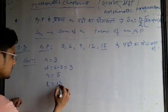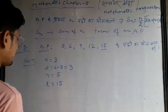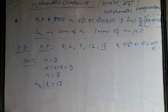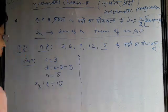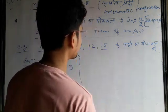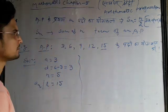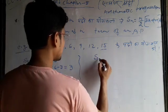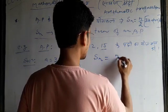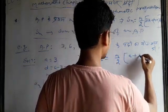We will use L equals 15. If we know L, to find the sum we use the short formula: Sn is equal to n by 2 into a plus l.